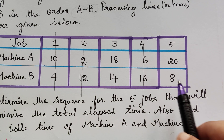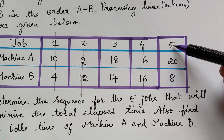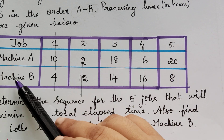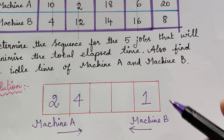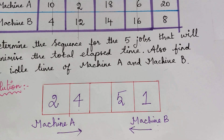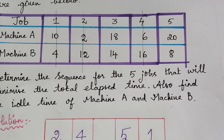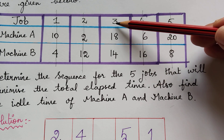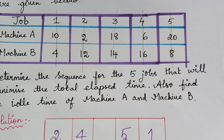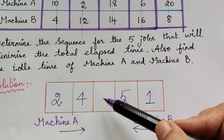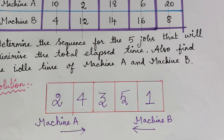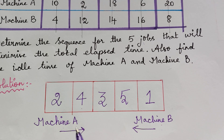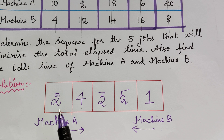After completing that we give a strike. Out of the remaining values, 8 is the least value and it is for job 5, which is under machine B. So 5 has to be written under machine B. We give a strike, and the only job left is job 3, which we write in the last remaining cell. So the order of jobs to be performed is 2, 4, 3, 5, 1 — this is known as the job sequencing.